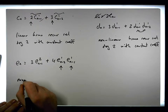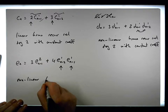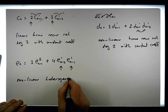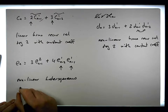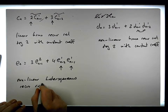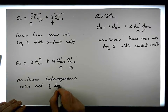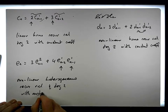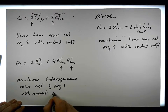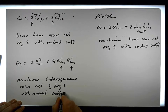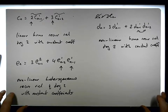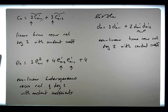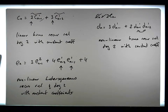So e(n) is a nonlinear heterogeneous recurrence relation of degree 2 with constant coefficients. If we added a constant term as well, it would still be heterogeneous.